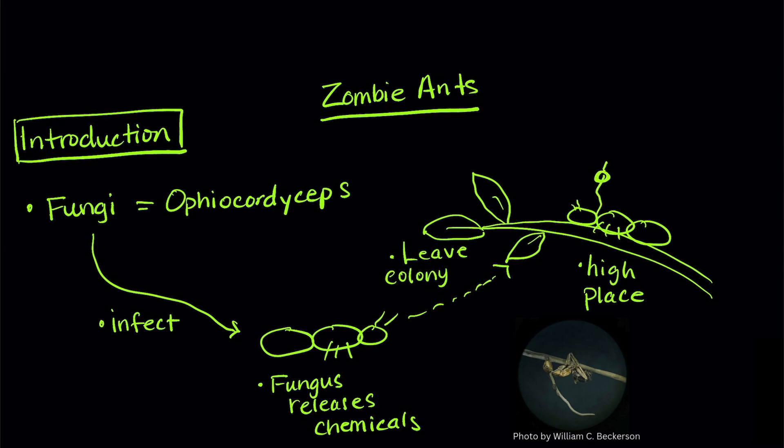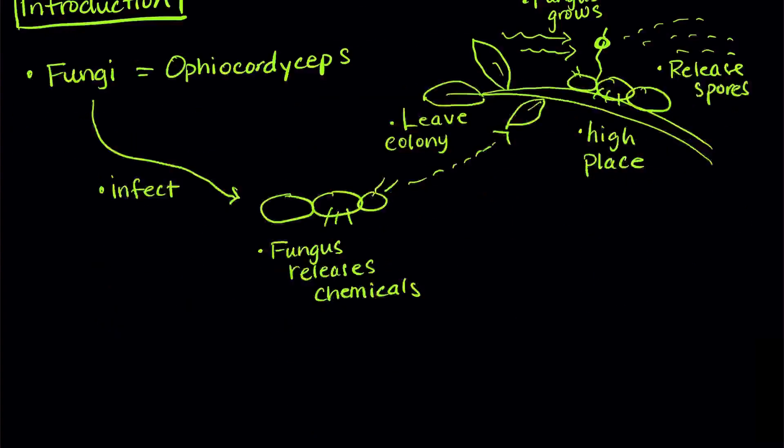The ant will leave the colony and find a high place to cling to. The fungus will then consume the ant. When the fungus grows out of the ant, it releases spores. And because the ant is in a high place, the wind can help spread the spores, which increases the chance it will infect other ants.